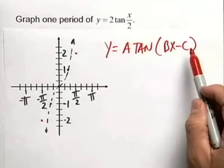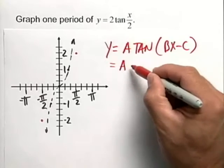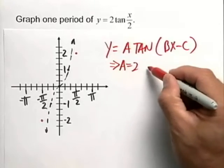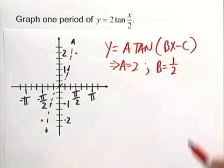Notice c is 0 in this case because we have no addition or subtraction inside. We can recognize that a is equal to 2 and that b is actually equal to 1 half.